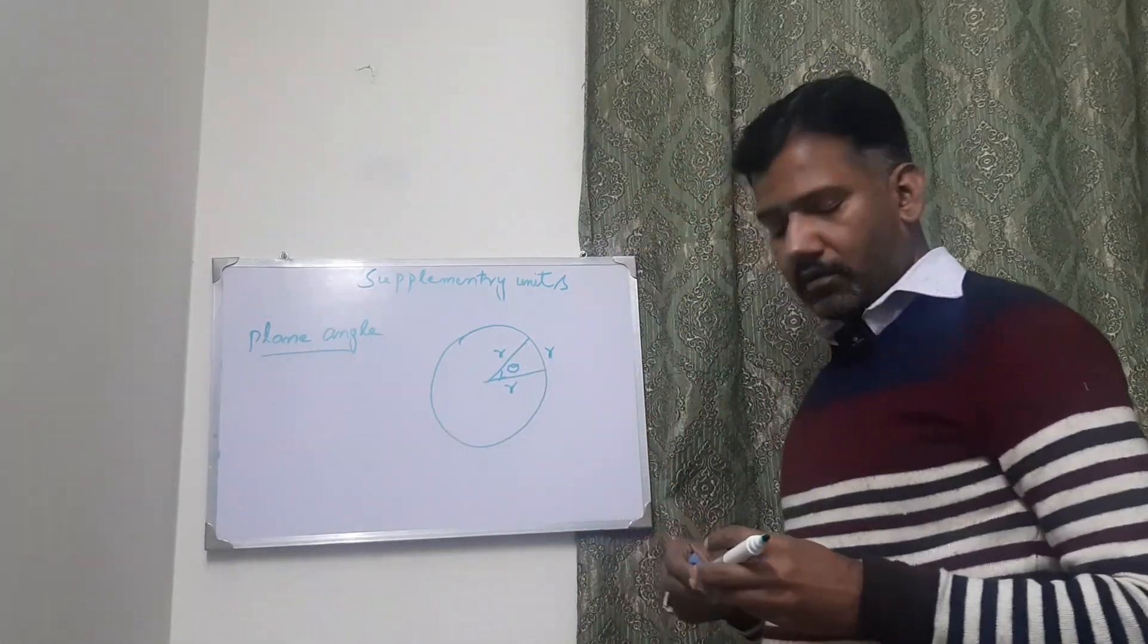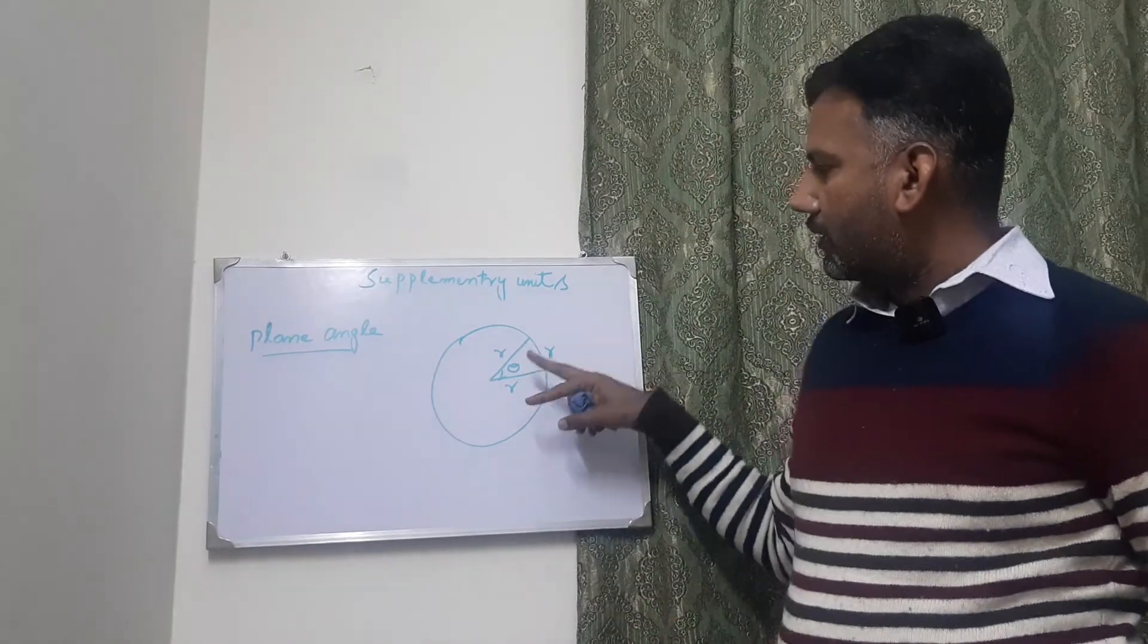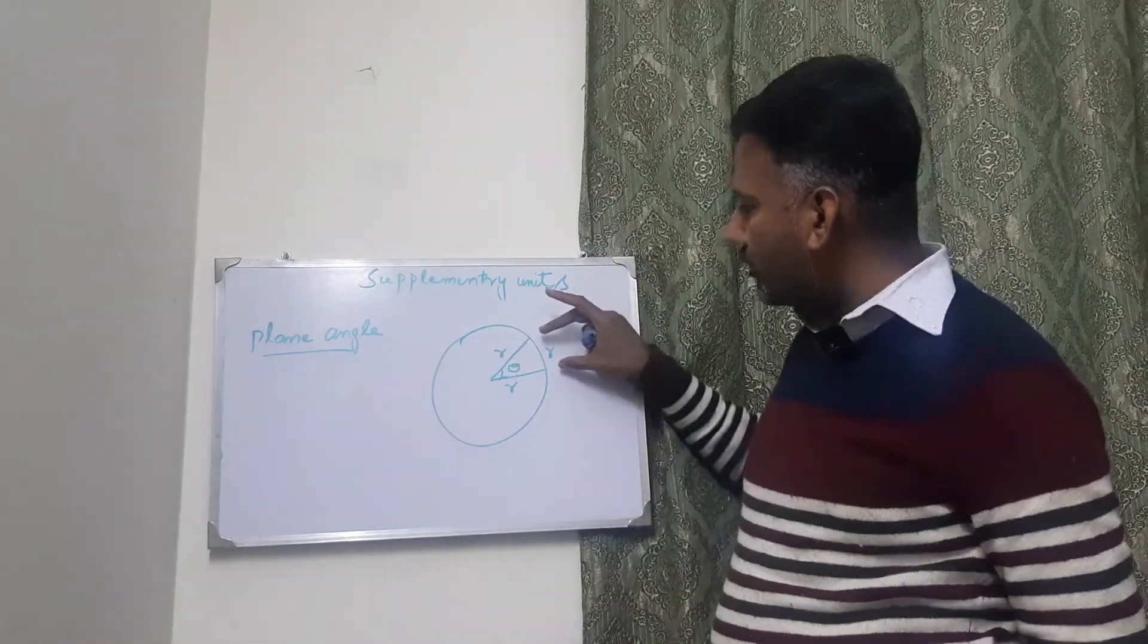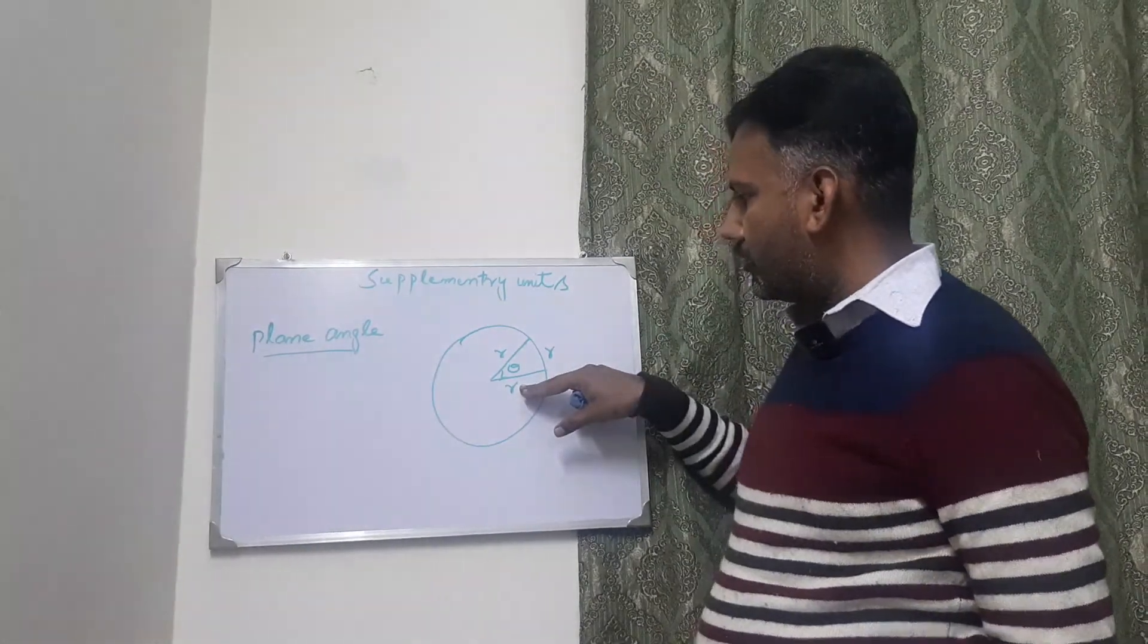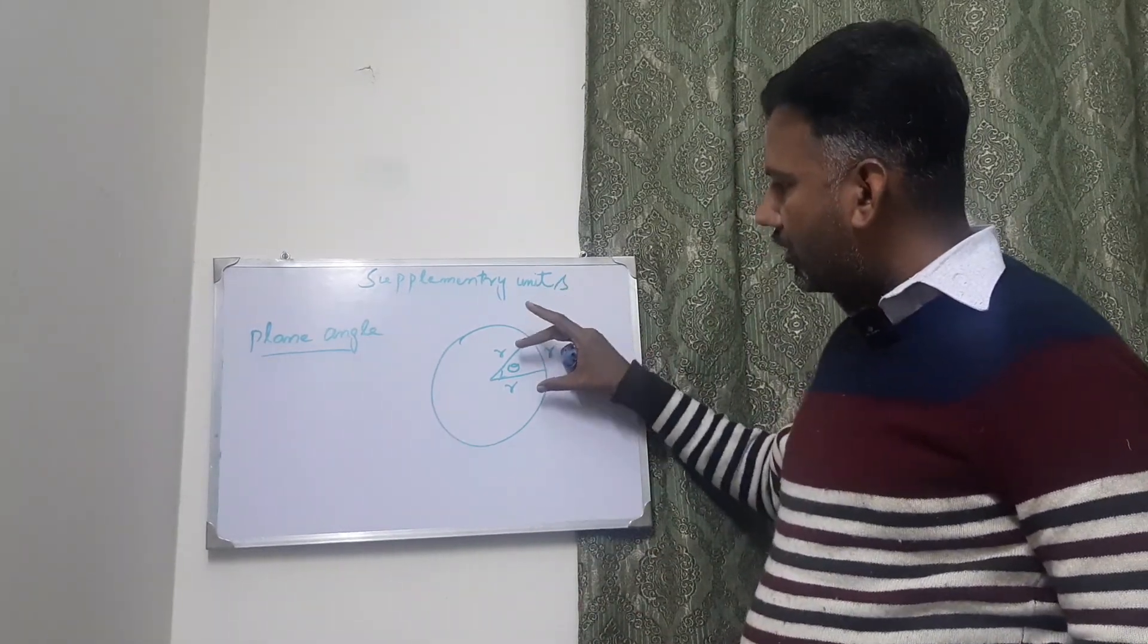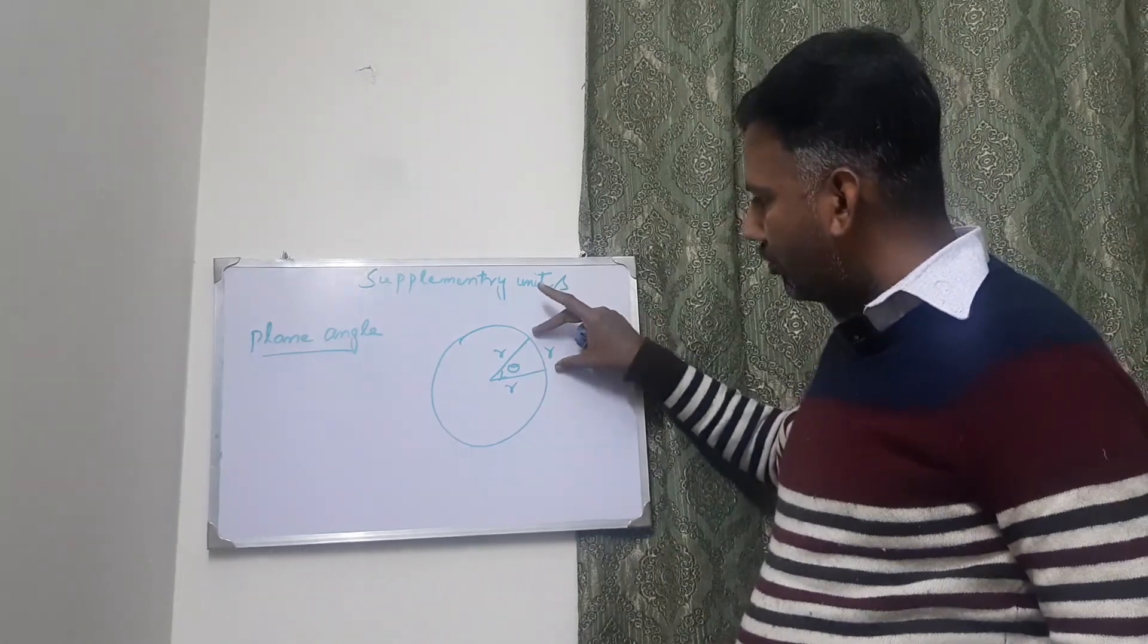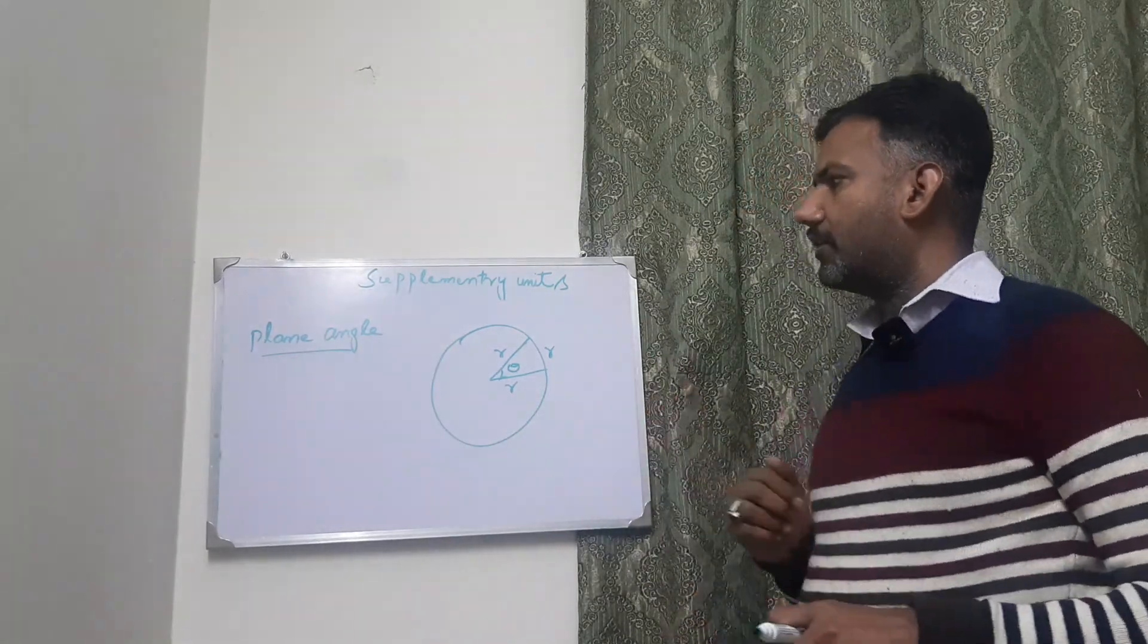we can define the angle made between two radii of a circle which cut off the circumference of a circle into an arc whose length is equal to the radius of a circle. So this is the definition of a plane angle.